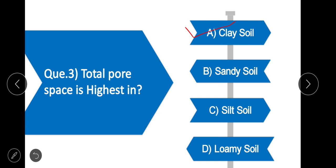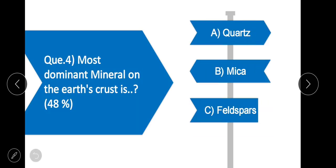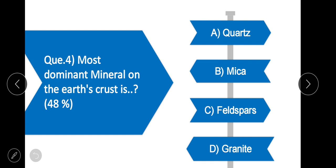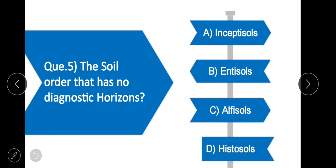Question 4: The most dominant mineral on the Earth's crust — the correct option is C — feldspar. Feldspar is 48% of total Earth crust material.